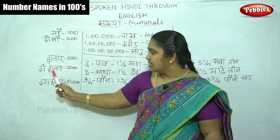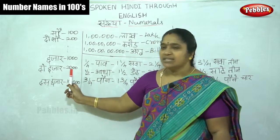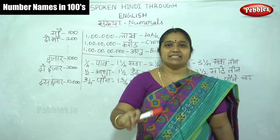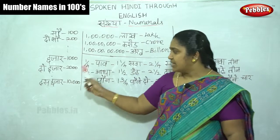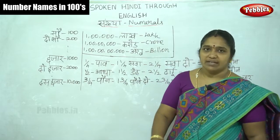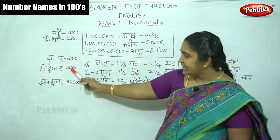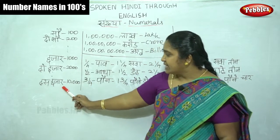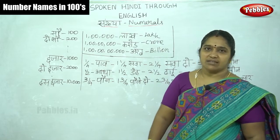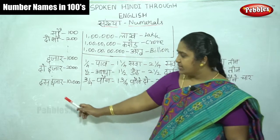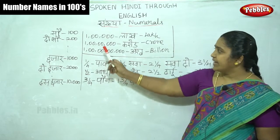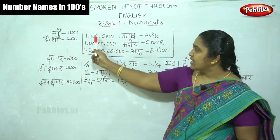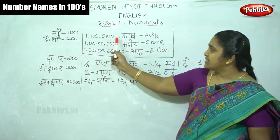Do Hazar means 2000, Teen Hazar means 3000. We can extend that further — Tash Hazar, and then 100 Hazar, which is one lakh.